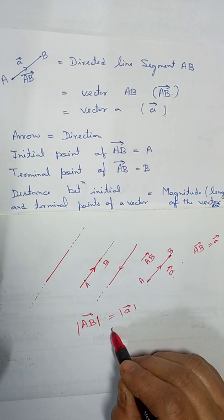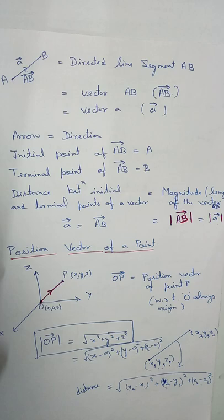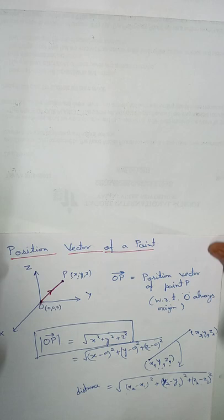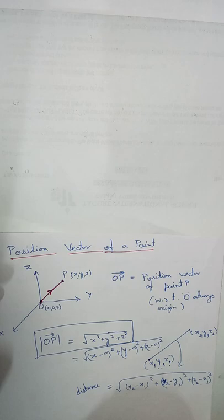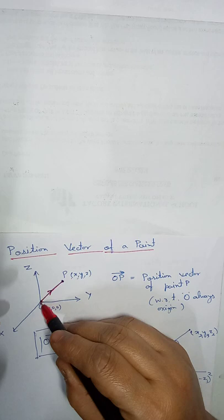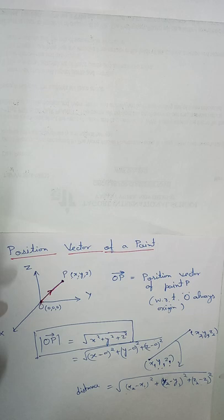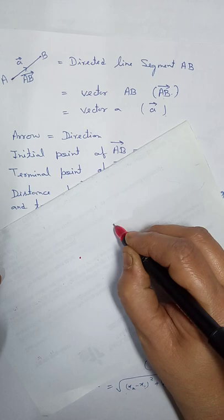Now, what is the position vector? The position vector of a point P is OP — the position vector is always with respect to the origin. But how will we find the magnitude of OP? We have learned the distance formula in Class 11th.